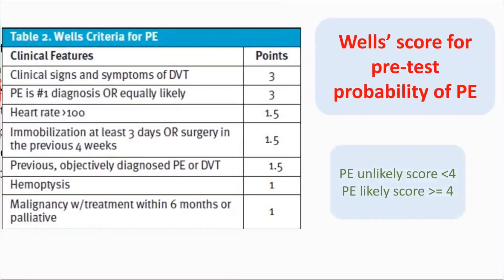When you want to diagnose a case, you have to use the Wells score. This is for the pre-test probability of pulmonary embolism. You collect the points: if the patient has clinical signs and symptoms of DVT, they get three points. If pulmonary embolism is the first differential diagnosis or equally likely, they also get three. For example, if the patient is suspected of having pneumonia and there are clear signs of pneumonia, you do not give three points. But if there is no other differential diagnosis apart from pulmonary embolism, or PE is the most suspicious one, then they get three.